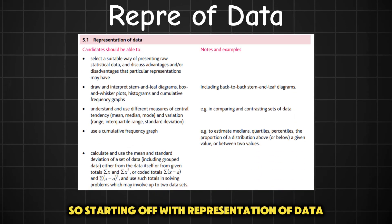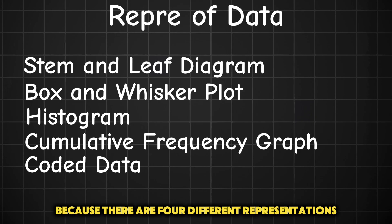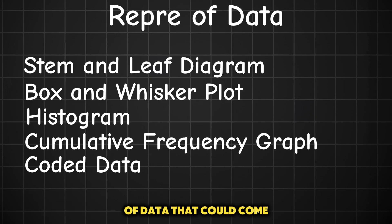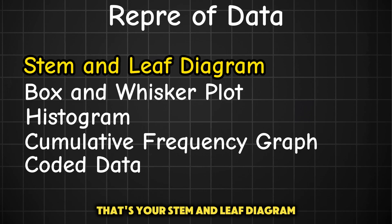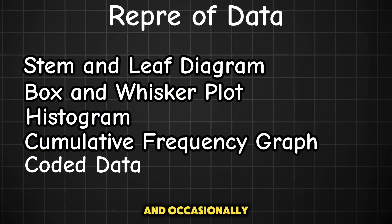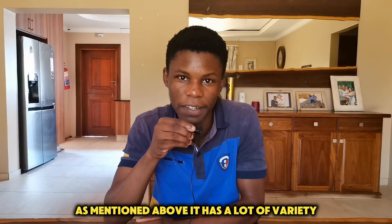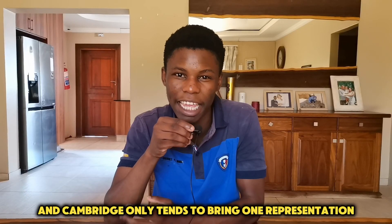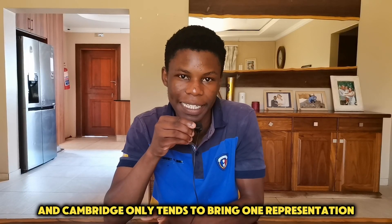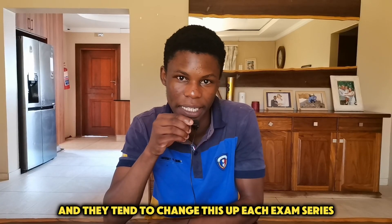Starting off with representation of data, this one's always a tricky one to predict because there are four different representations of data that could come: stem and leaf diagram, box and whisker plot, histogram, cumulative frequency graphs, and occasionally a coded data question. The reason why it's so difficult to predict is that it has a lot of variety and Cambridge only tends to bring one representation per paper, and they tend to change this up each exam series.